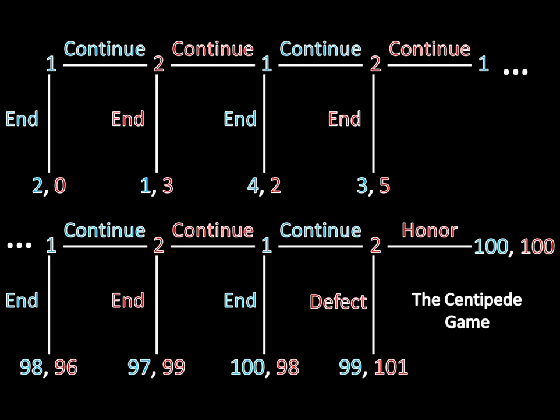What's interesting about the Centipede game is that when we do experiments in laboratories where we get two players to play this game over dollars, we don't actually see what the subgame perfect equilibrium predicts. We would predict that player 1 ends things right off the bat, getting 2 while she gets 0. What occurs in practice is the players actually play for a while — say, until player 2 ends where she gets 57 and player 1 gets 55. They're ending somewhere in between and doing better than the equilibrium prediction. This creates an interesting discrepancy, and I'm going to address why we see it and whether it's really a problem with game theory or something we should expect given our assumptions.